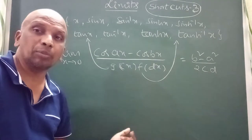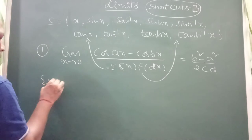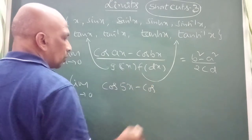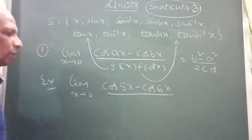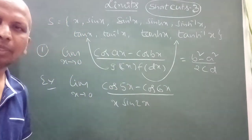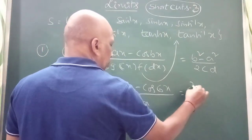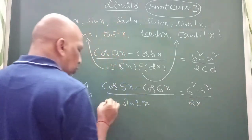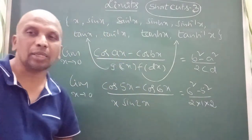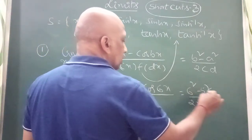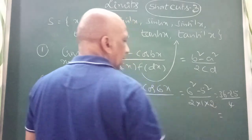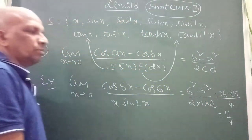Now I am going to do an example so you can understand this easily. For example, limit x tends to 0 of cos(5x) minus cos(6x) divided by x times sin(x). So you can write b squared minus a squared — that is 6 squared minus 5 squared — by 2 times the coefficients. You get 36 minus 25 by 4, which gives the answer 11 by 4.